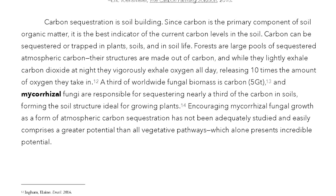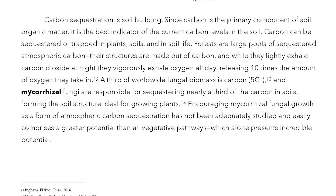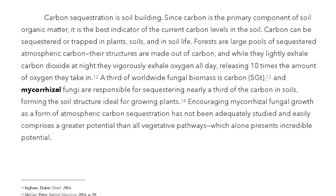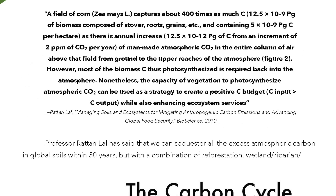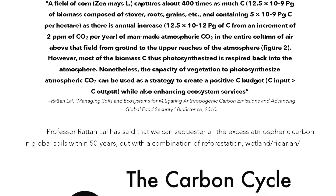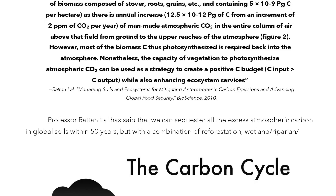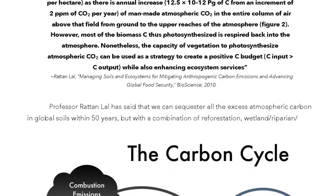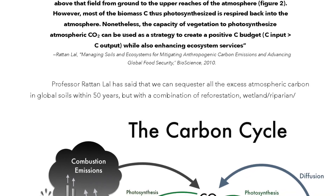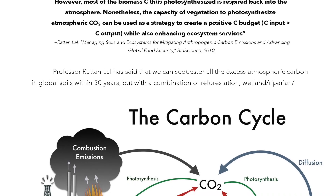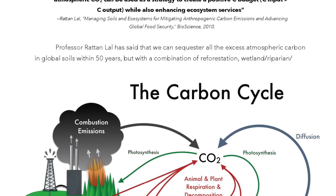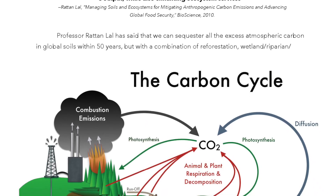Encouraging mycorrhizal fungal growth as a form of atmospheric carbon sequestration has not been adequately studied and easily comprises a greater potential than all vegetative pathways, which alone presents incredible potential. A field of corn captures about 400 times as much carbon as there is annual increase of man-made atmospheric CO2 in the entire column of air above that field. However, most of the biomass carbon thus photosynthesized is respired back into the atmosphere. Nonetheless, the capacity of vegetation to photosynthesize CO2 can be used as a strategy to create a positive carbon budget while also enhancing ecosystem services. — Rutan Lal, Managing Soils and Ecosystems for Mitigating Anthropogenic Carbon Emissions and Advancing Global Food Security, Bioscience 2010.